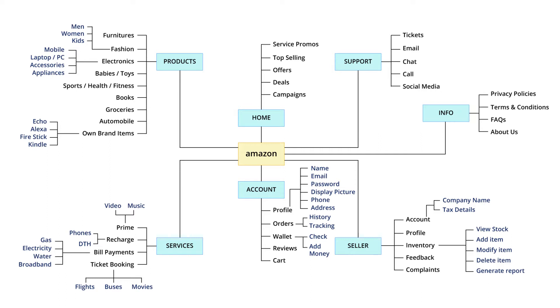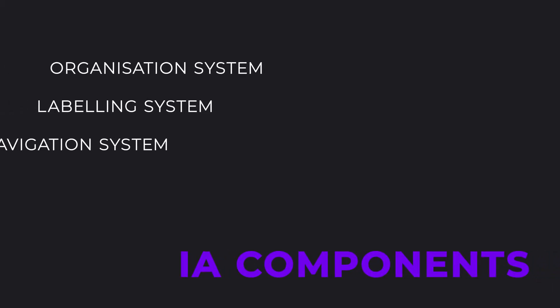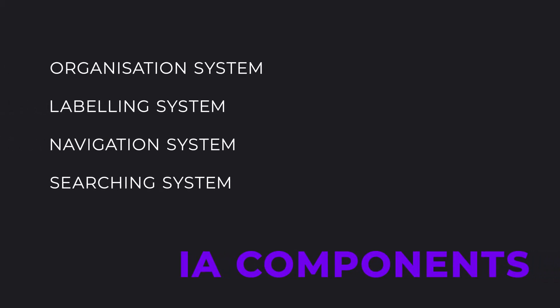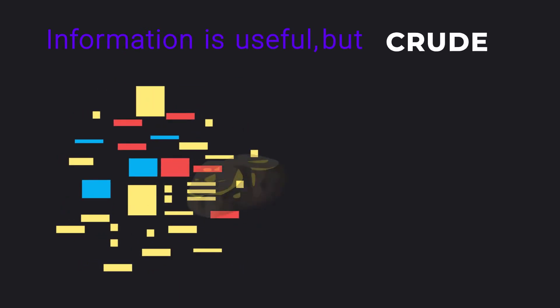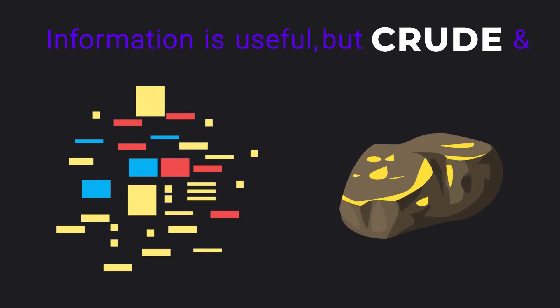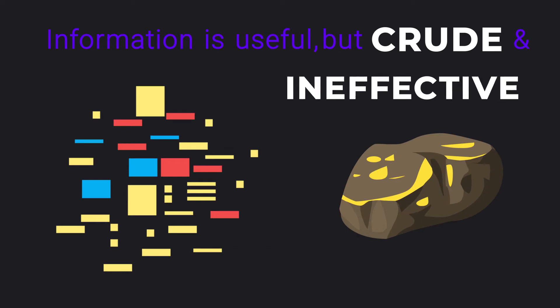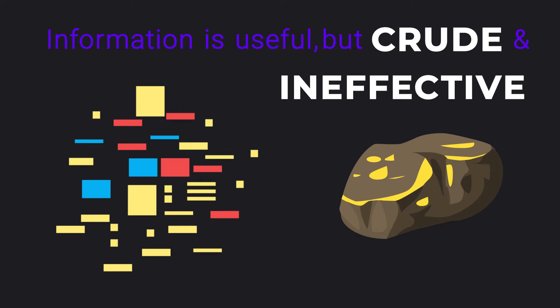So let's continue where we left off. We've been talking about the four IA system components for quite some time now, but how are they useful? The information we collected so far isn't useless, but it is still in a very crude form, meaning it will be ineffective if we present it as such.